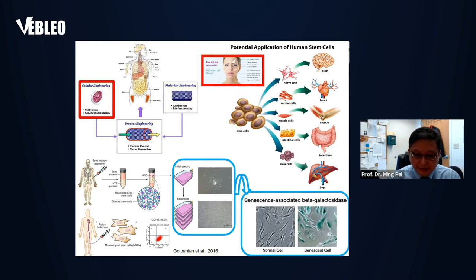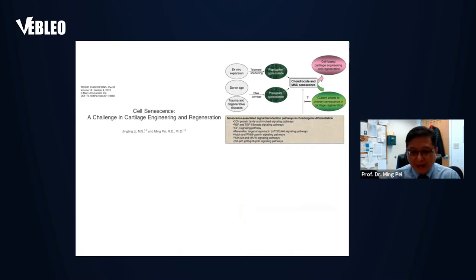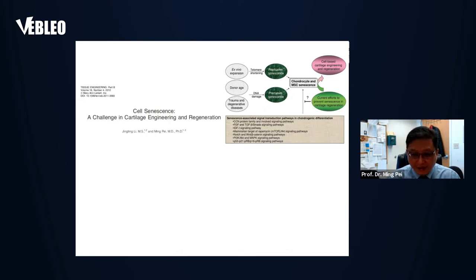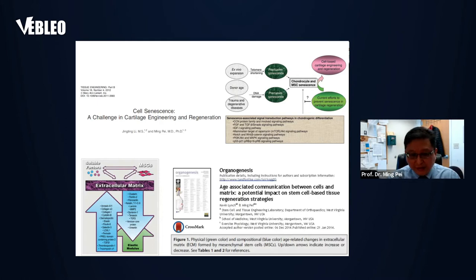Unfortunately, during ex vivo expansion, stem cells tend to become senescent. Cell senescence can occur because of the ex vivo expansion, or may come from the donor — old age may cause cell senescence — and disease or trauma can also cause cell senescence. Here we look at the signal pathways associated with cell senescence in chondrogenic differentiation. In our previous review articles, we also discussed extracellular matrix changes: some matrix proteins might increase, some might decrease, and the biomechanical properties of the tissue also change.